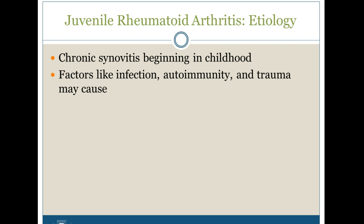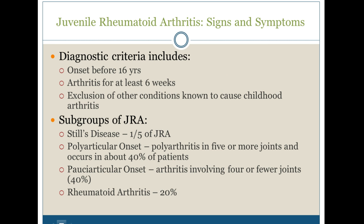Another unfortunate aspect is juvenile rheumatoid arthritis — chronic synovitis beginning in childhood. Factors like infection, autoimmunity, and trauma can cause this. To be diagnosed with juvenile rheumatoid arthritis, or JRA, we need to see onset before 16 years old, arthritis lasting at least six weeks, and exclusion of other conditions that could cause childhood arthritis. There are subgroups: Still's disease accounts for one-fifth; 40% have polyarticular onset involving five or more joints; another 40% have pauciarticular onset involving four or fewer joints; and straight rheumatoid arthritis occurs in 20% of patients. That concludes our section on rheumatoid arthritis.